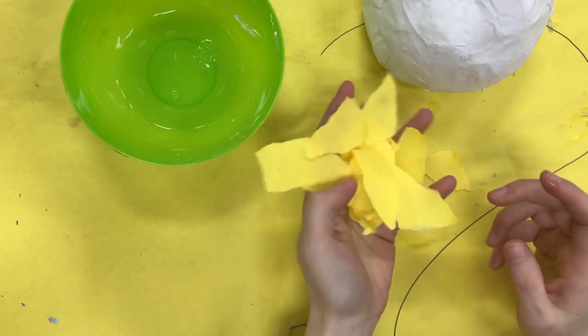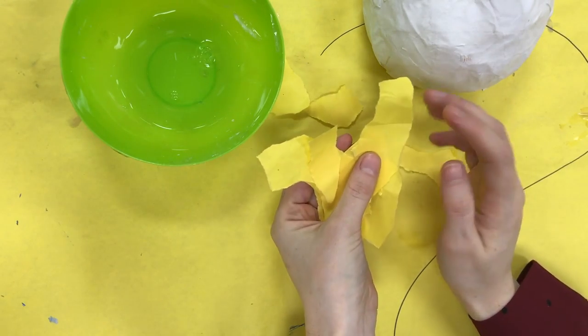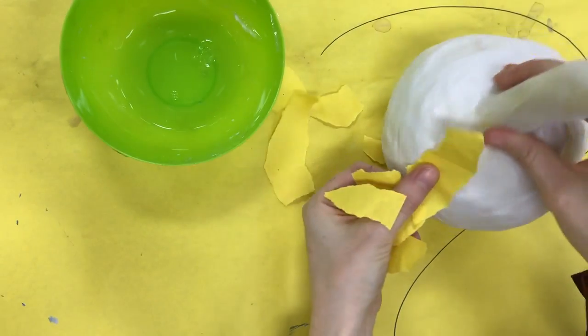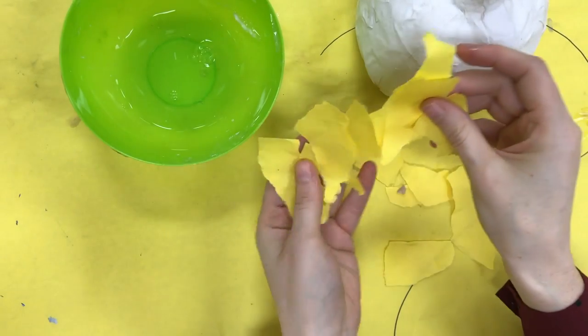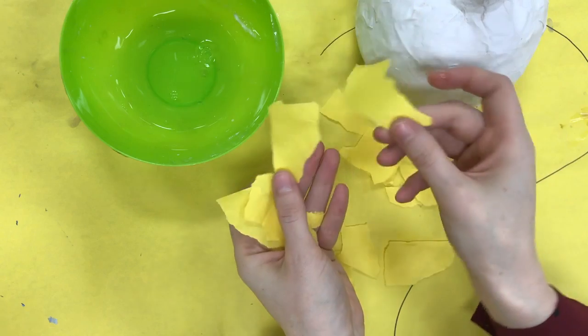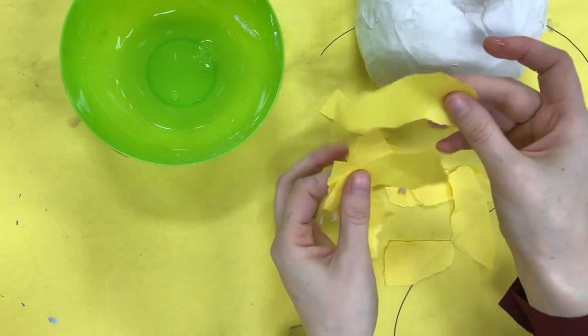Our second layer is going to be with yellow paper. By changing the color of the paper it ensures that you cover every single spot on the next layer. You'll notice that this week we are using even smaller pieces of paper. These are only about two inches long.